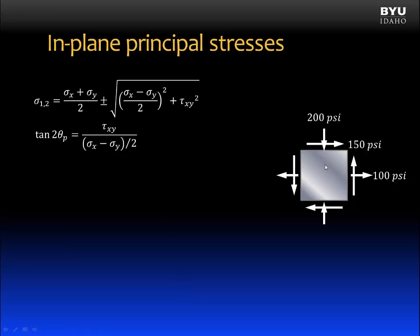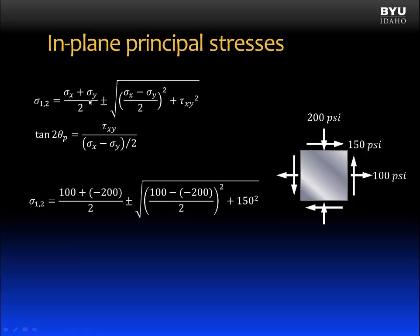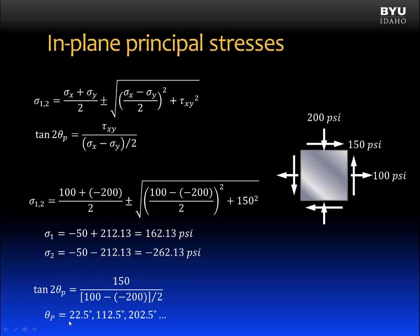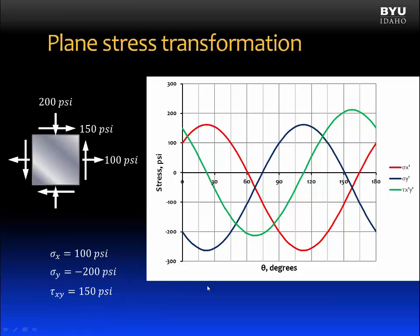Let's see an example. Using the stress element with sigma x equal to 100 psi, sigma y equal to negative 200 psi, and tau xy equal to positive 150 psi, we calculate the principal stresses. The first term gives negative 50, the second term gives 212.13. Adding them gives sigma 1, and subtracting gives sigma 2. We also calculate theta p by plugging in values, giving theta p equal to 22.5 degrees. It will also be 22.5 degrees plus or minus 90 degrees, with 22.5 degrees being the smallest rotation angle that provides the principal stresses.